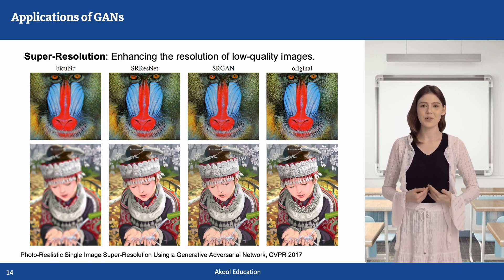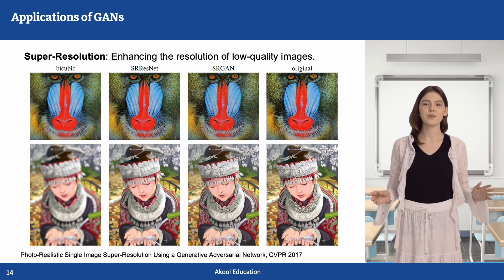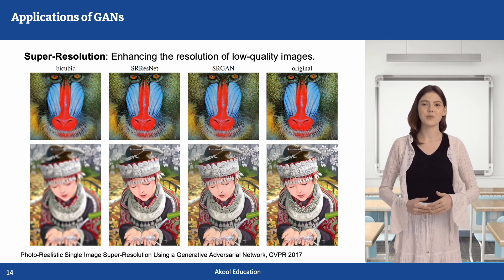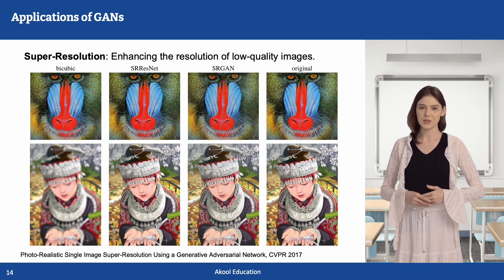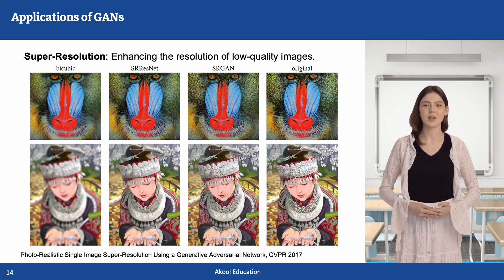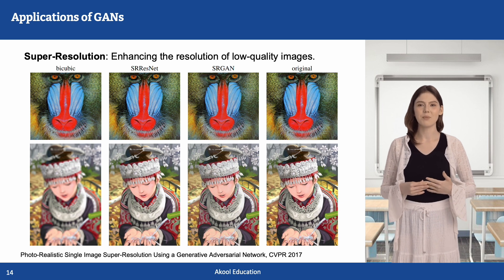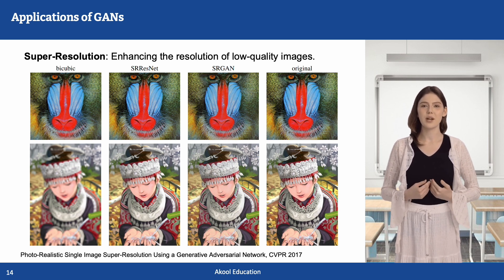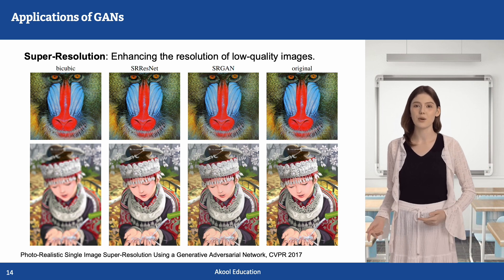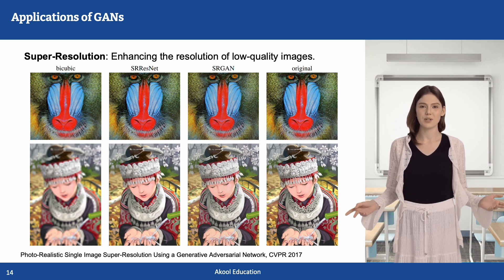GANs have been widely used to enhance low-resolution images into high-resolution detailed images, a process known as super-resolution. This approach, called Super-Resolution GAN, was first introduced in the paper titled "Photorealistic Single-Image Super-Resolution Using a Generative Adversarial Network" at CVPR 2017. GAN-based super-resolution methods significantly outperform traditional interpolation-based upscaling by adding realistic high-frequency details. They consist of two main components: a generator, which takes a low-resolution image as input and generates a high-resolution image, and a discriminator, which evaluates whether the generated high-resolution image looks real by comparing it with the original. Through adversarial training, the generator learns to reconstruct realistic textures and details lost in the low-resolution input.